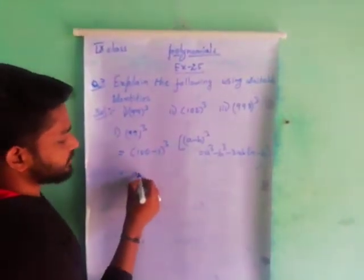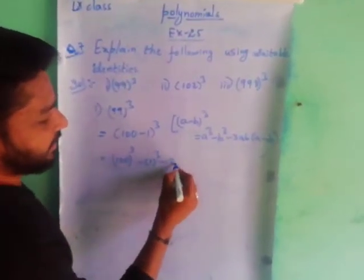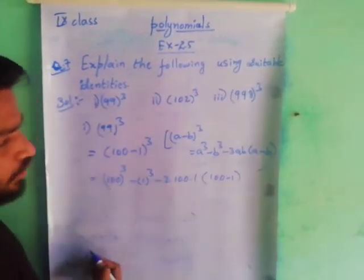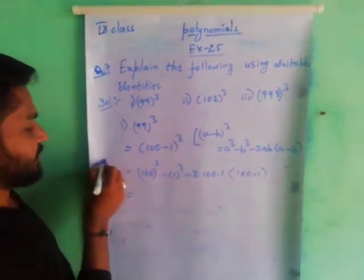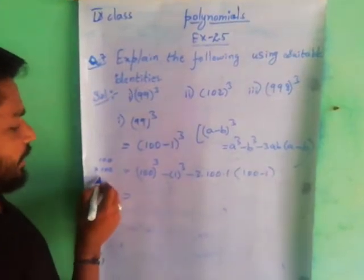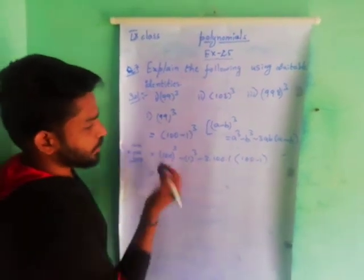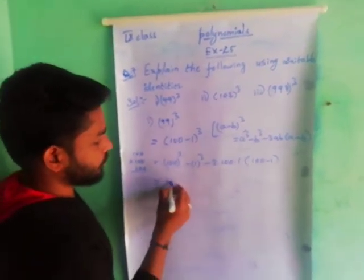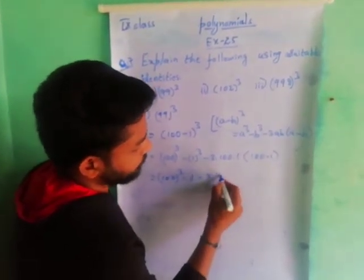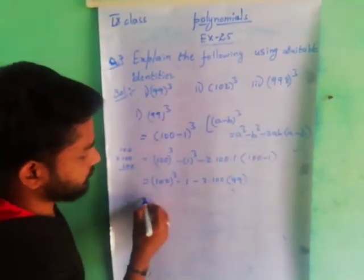So a cube means 100 whole cube, minus b cube means 1 cube, minus 3 into 100 into 1, into (a - b) which is (100 - 1). 100 cube means 100 into 100 into 100, which is 1,000,000. You can just leave it or expand it further. 3 into 100 into (100 - 1) gives 300 into 99.